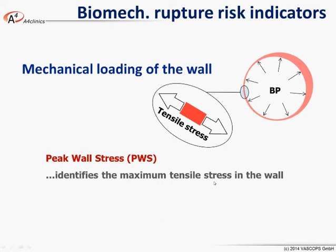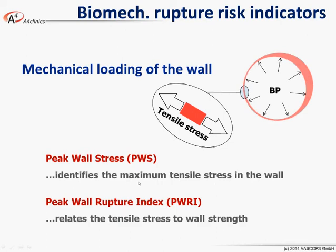However, we can do better: we can relate the tensile stress to a tensile strength, and then introduce a peak wall rupture index, taking the highest wall rupture risk index — called the peak wall rupture risk index — and investigate to what extent this would be a risk indicator.